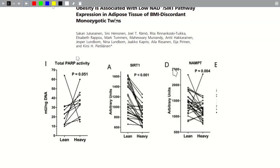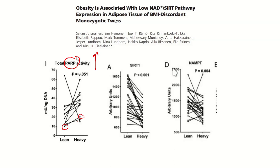This study looked at why that might be and what some of the differences are. One of the major things they found was an increased amount of something called PARP activity. PARP is an enzyme. You can see this line connects a pair of twins — PARP activity of the lean twin on the left and the fatter twin on the right. The heavier twin has more PARP activity.